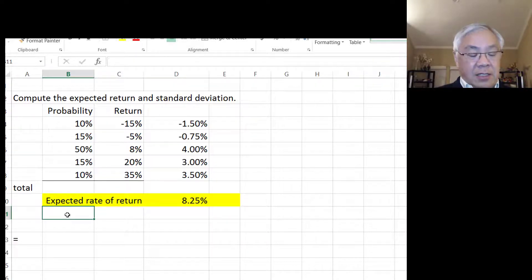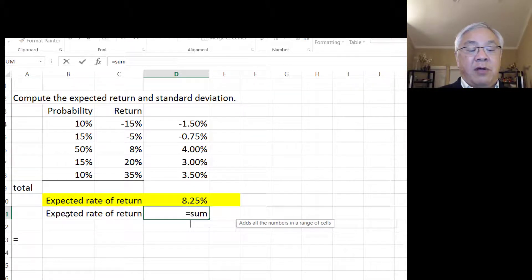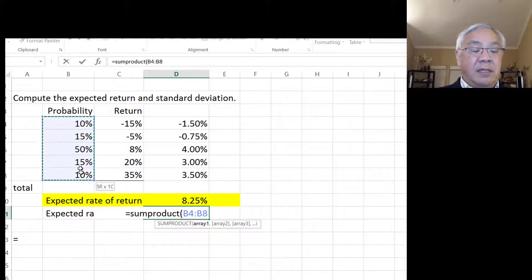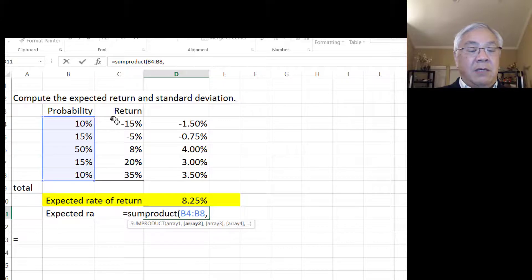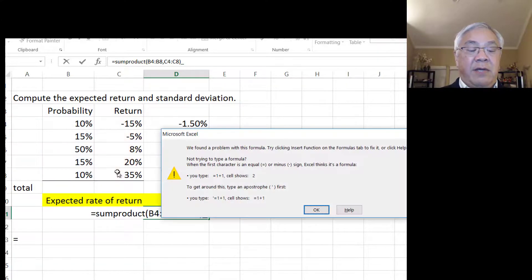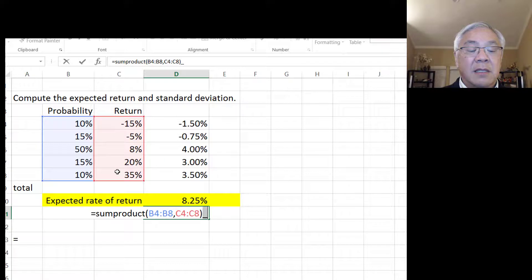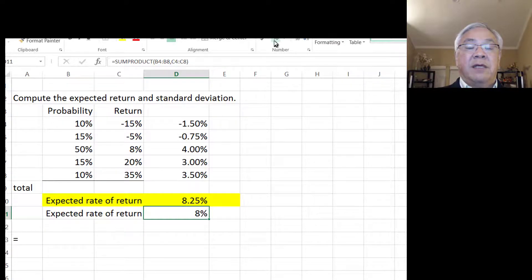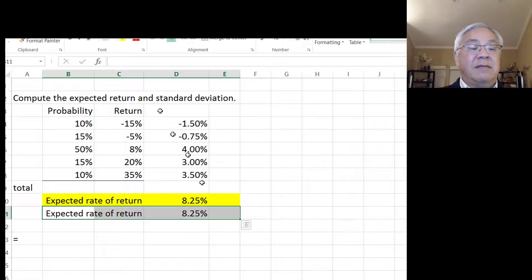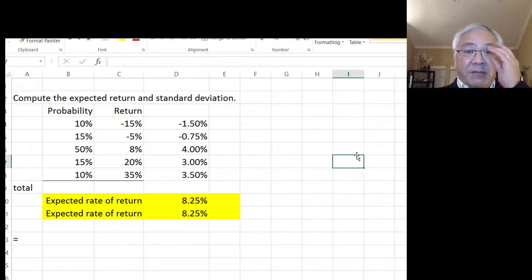We also could take a shortcut. We could do expected rate of return is equal to SUMPRODUCT, and we do the two arrays of the probability, comma, the return, close parens, and we end up with the same number. So if we expanded the digits, we'd see it as the same number. So either way works, obviously, just like we've seen in time value of money. There are different ways to arrive at the same result.